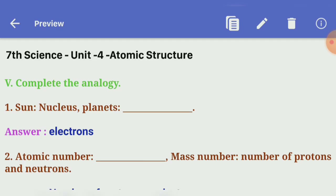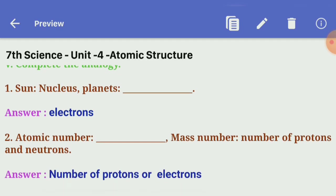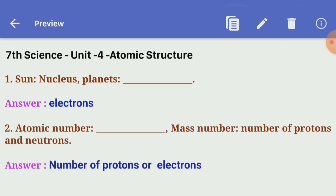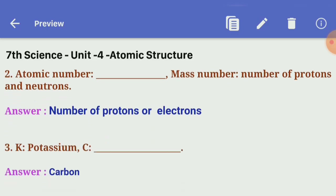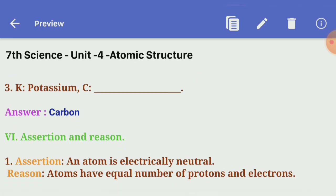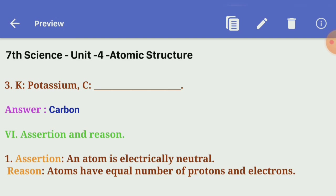Fifth section: Complete the analogy. First: sun — nucleus; planets — Answer: electrons. Second: atomic number — number of protons or electrons; mass number — number of protons and neutrons. Third: K — potassium; C — Answer: carbon.